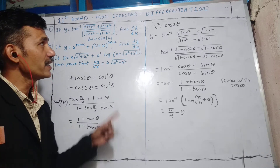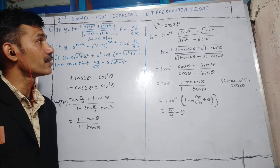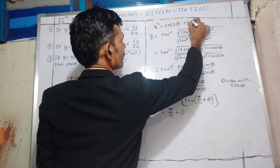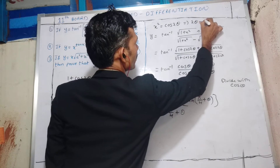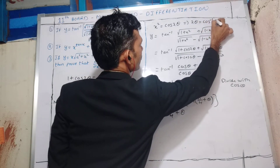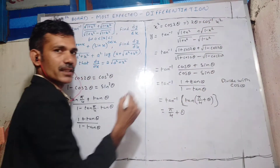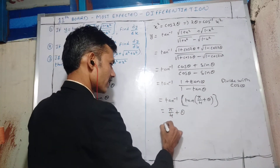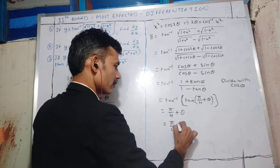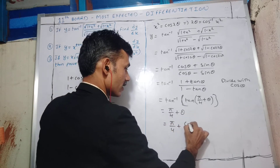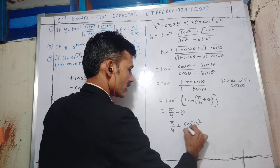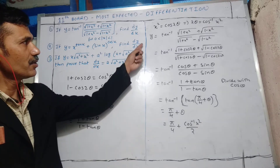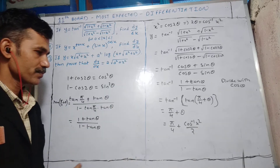Since we substituted x² = cos2θ, we have 2θ = cos⁻¹(x²), so θ = cos⁻¹(x²)/2. Therefore y = π/4 + cos⁻¹(x²)/2. Now we can differentiate.